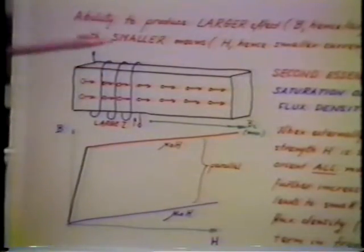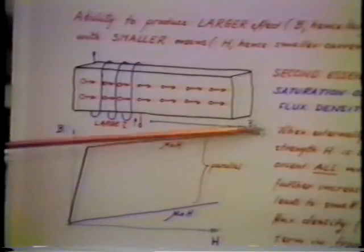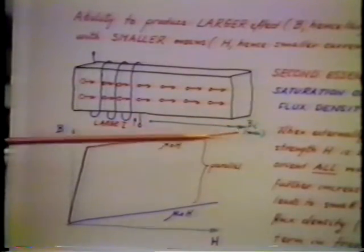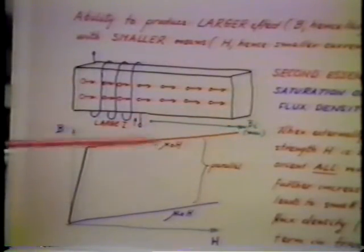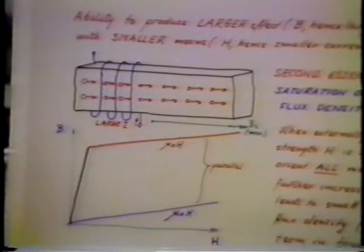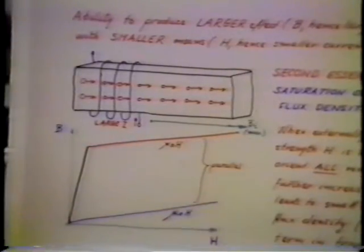The reason is that in the flux in the core there is of course a small increase, but that's basically the one due to the increase in the free space, µ₀H, which is the one shown here.